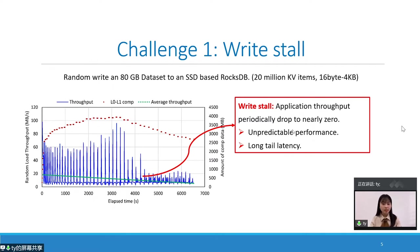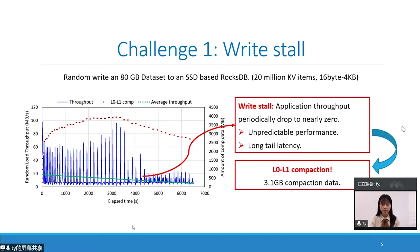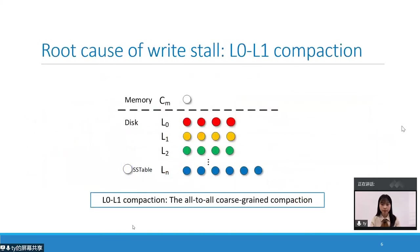To figure out the reason for write stalls, we record the period of each flush and compaction of different levels. Surprisingly, we find that the period of Level 0 to Level 1 compaction matches its write stall approximately. Each red line represents a Level 0 to Level 1 compaction; its length along the x-axis represents the latency of the compaction. The right y-axis shows the amount of data processed in each compaction, which reaches 3.1 GB on average.